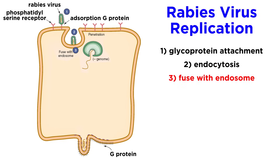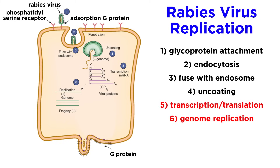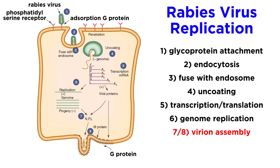Once there, the viral envelope fuses with the membrane of the endosome, which uncoats the virion and sends the nucleocapsid into the cytoplasm for replication. Within the cytoplasm, the virus uses a combination of its nucleocapsid-encoded enzymes and host cell machinery to transcribe viral RNA. Five mRNAs, one for each encoded protein, are produced. The virion then assembles in two phases: first, the nucleocapsid is assembled in the cytoplasm, then the virion is pushed out through the cell plasma membrane in a process called budding, taking part of that membrane with it, which gives the virion its envelope. The new virion is now ready to infect another host cell.